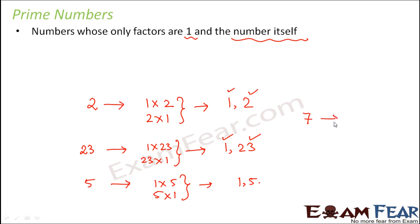What about 7? 7 also can be written either as 7 into 1 or 1 into 7, which shows that it has two factors, 1 and itself. So therefore, all of these are examples of prime numbers.